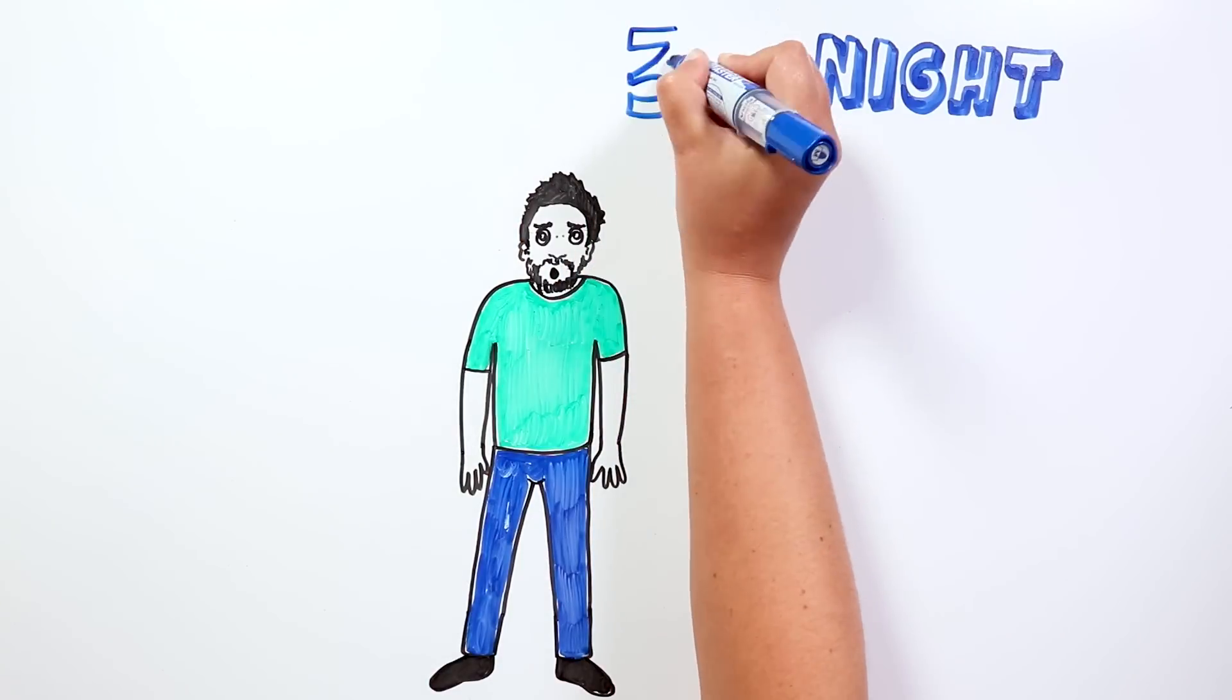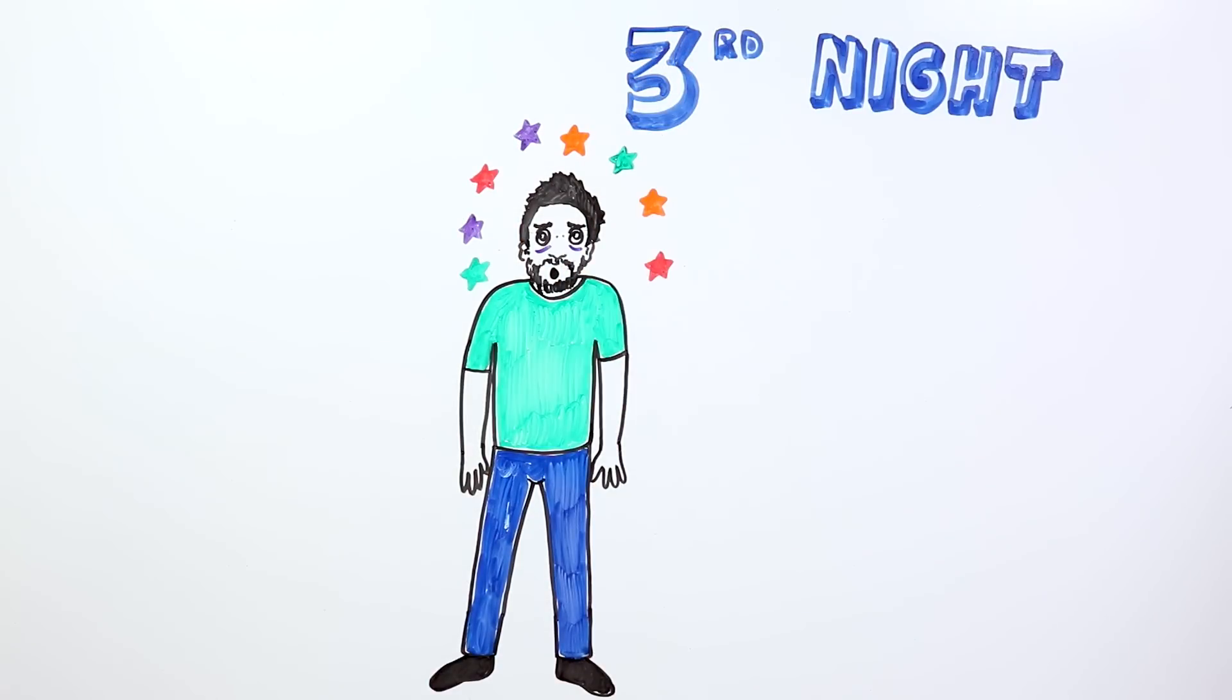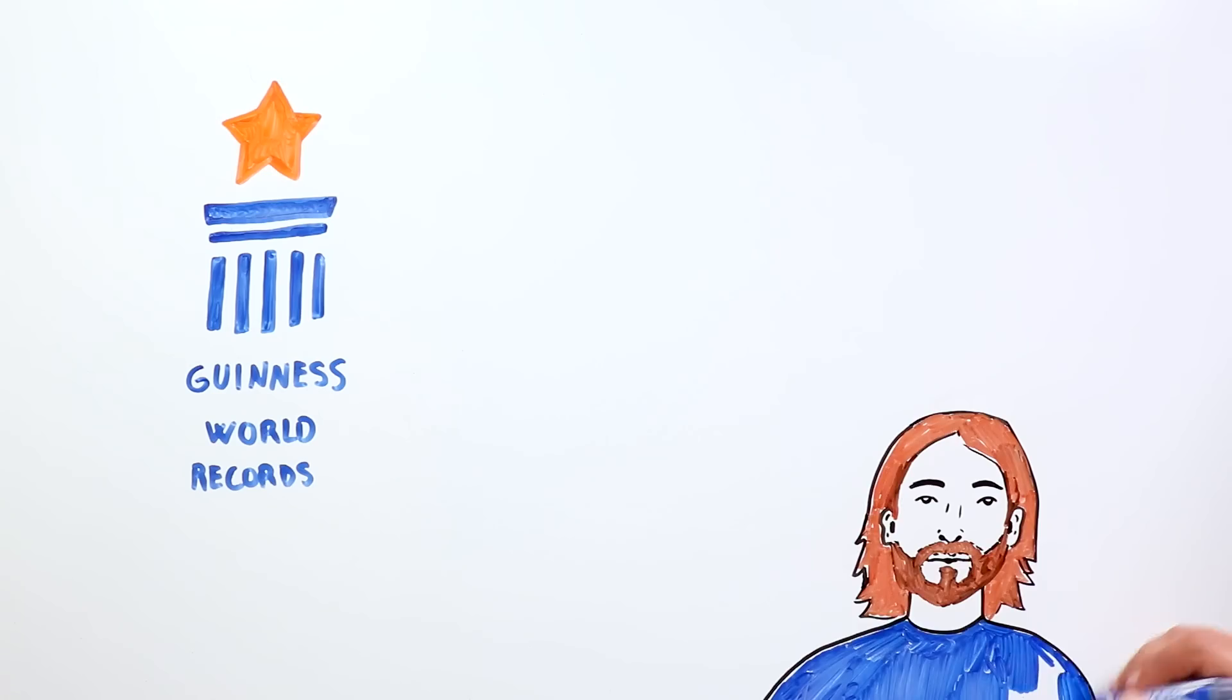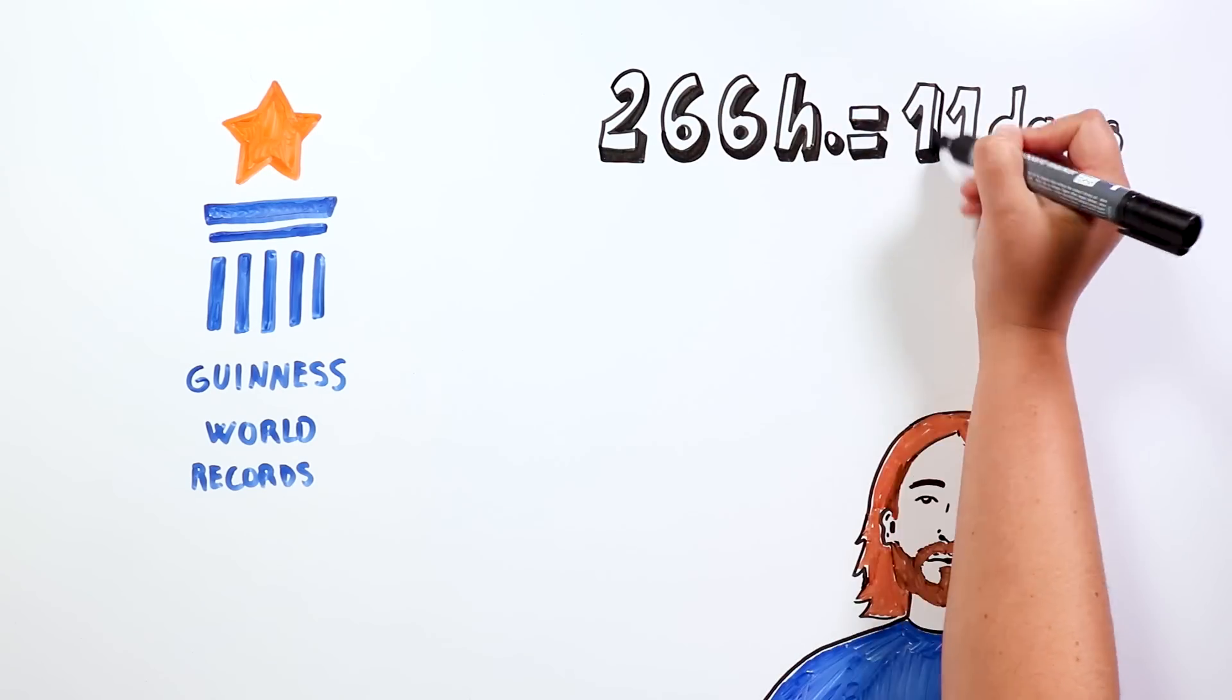And after 3 days without sleeping, we might start experiencing hallucinations. The most recent Guinness record for the person who has stayed awake the longest belongs to the British man Tony Wright, who stayed awake for 266 hours straight.